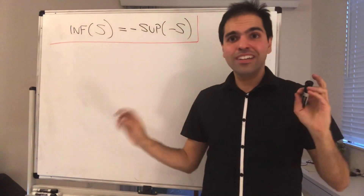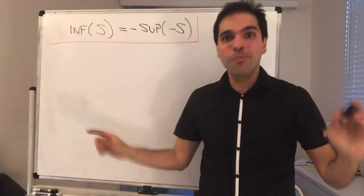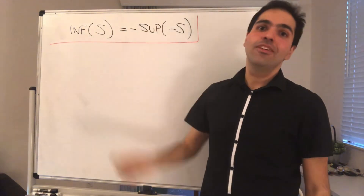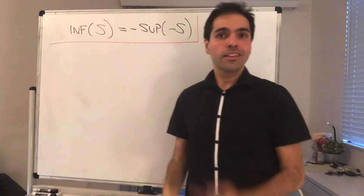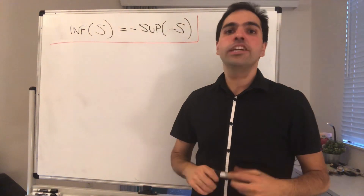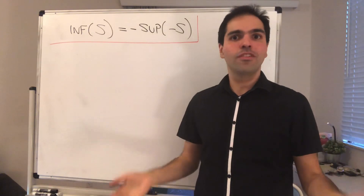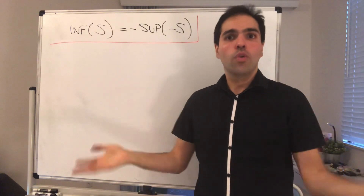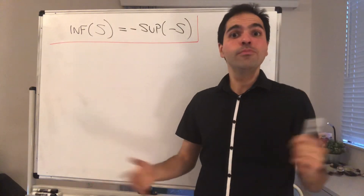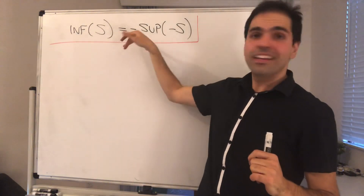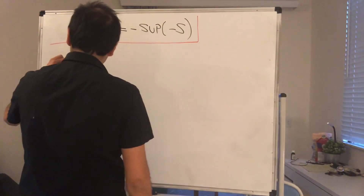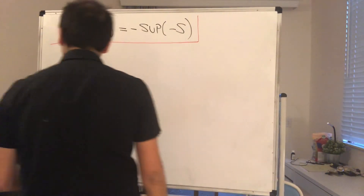Thanks for watching. Today I would like to talk about an important identity that relates the infimum of a set with the supremum. From our previous video, we know that the supremum of a set always exists or is infinity, but the question is: how do we know that the infimum always exists? It comes from this formula here. Let me remind you of the concept of infimum.